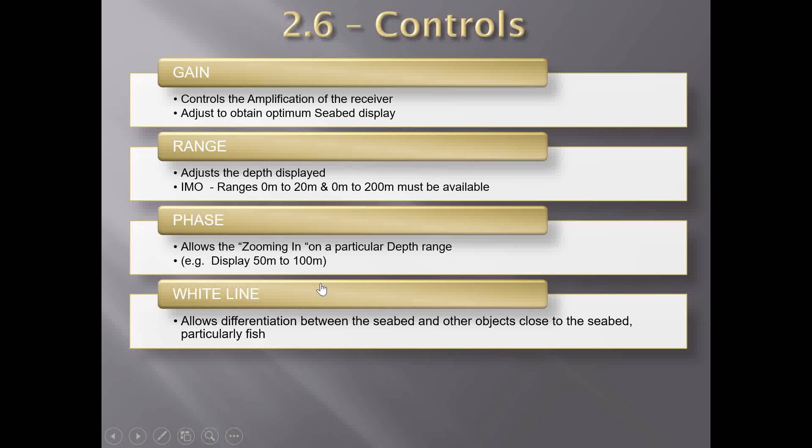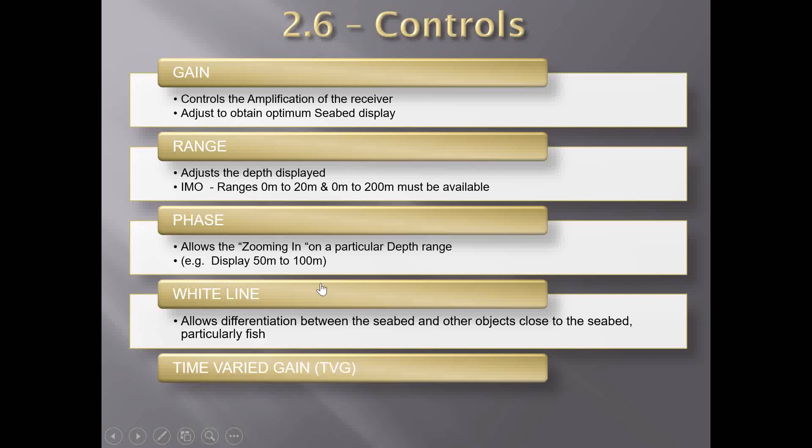The white line switch is a facility to enable the operator to distinguish echoes which are close to and on the bottom of the seabed. The echo of the sea bottom is modified so it appears as a thick white line, while the actual sea bottom is represented as a very thin line trace just above the white line. If there are objects such as a shoal of fish at or close to the bottom, these echoes will be displayed above the white line. This facility is also useful in bottom identification, operating by distinguishing weaker fish echoes from the stronger seabed echo and delaying the seabed echo display for a short period.